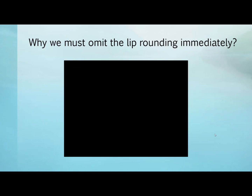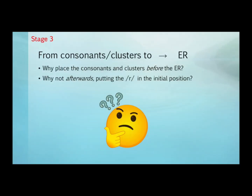Hopefully you were able to see the exaggerated movements with this young man. Co-articulation from consonants and clusters to ER. Earlier, the client achieved consistent pure ER sounds. We now place consonants and clusters before the ER. Why before instead of after? That means we're starting work with the final ER instead of the initial ER. Why would we do that? Remember when you had the client playing with the ER in order to purify it,